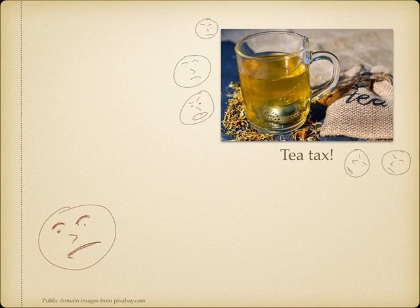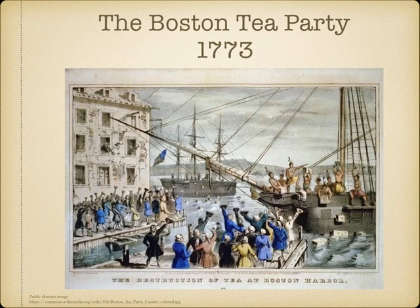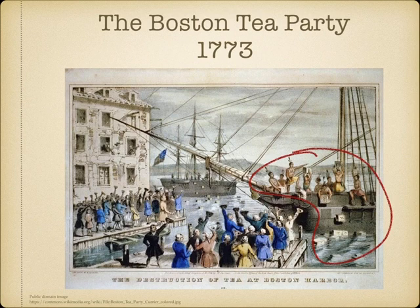People loved tea and did not want to keep paying taxes for it. So this led to what is now called the Boston Tea Party. There was a British ship in the water in the city of Boston. It had a lot of tea on it. Some people went onto the ship — some of them were dressed as Native American Indians — and they got all this tea and threw it into the water. So it was a protest against the government.